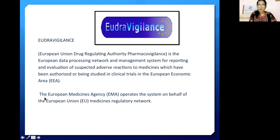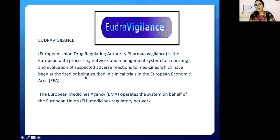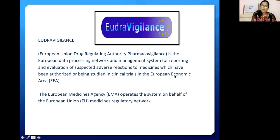When talking about Europe, they have EudraVigilance — the European Union Drug Regulatory Authority Pharmacovigilance system. It is the European data processing network and management system for reporting and evaluating suspected adverse reactions to medicines which have been authorized or are being used in a clinical trial in the European Economic Area. The European Medicines Agency operates this system within the European Union medicine regulatory network.